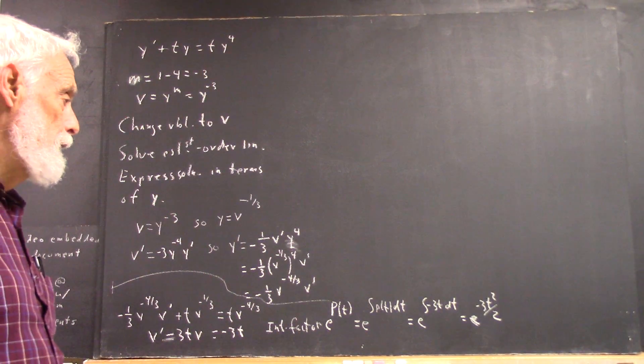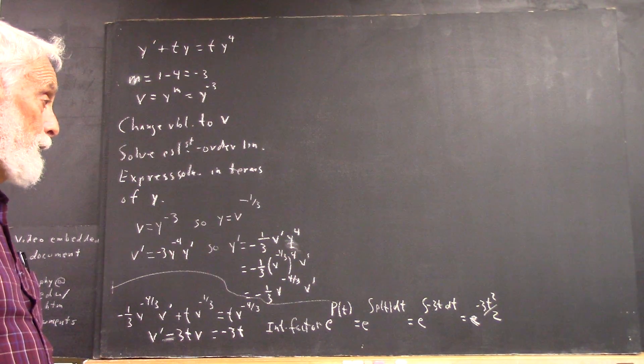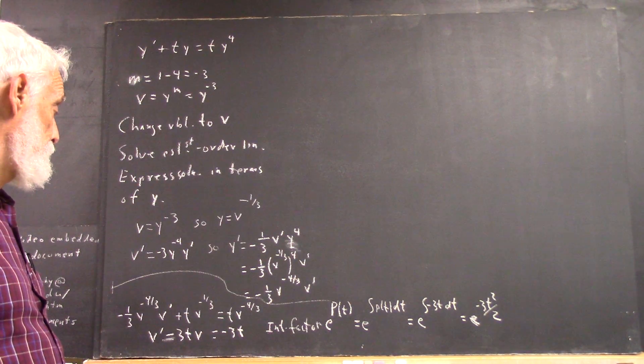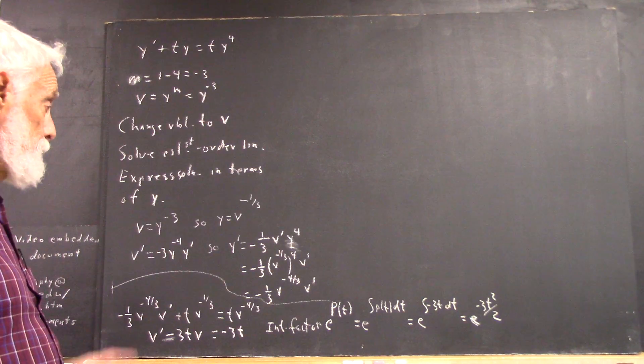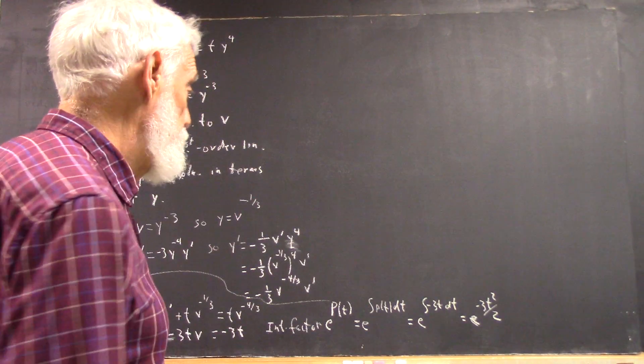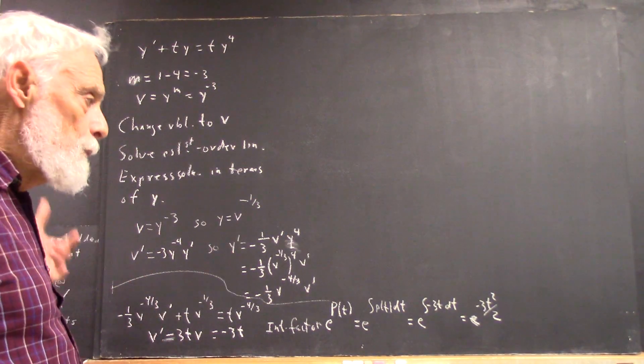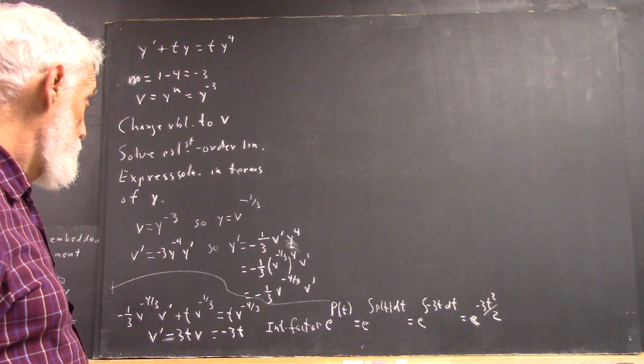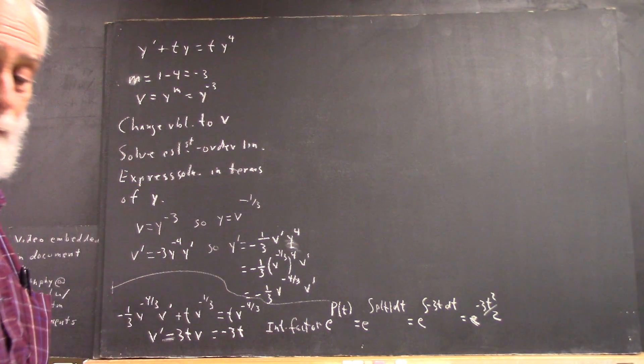And with that integrating factor, the left-hand side becomes just v e to the negative three t squared over two prime. So move on from there.